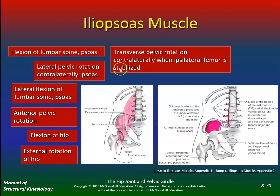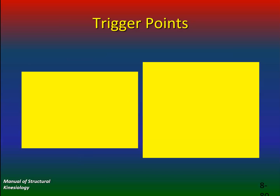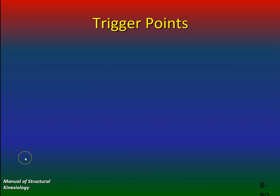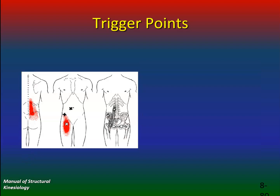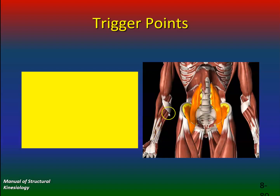The iliopsoas muscle — what does it do? It flexes the lumbar spine, causes anterior pelvic rotation, and flexion of the hip. Here are the trigger points right in here. If somebody comes in with pain along their thigh right around here, that could be the iliopsoas. It's a big muscle.